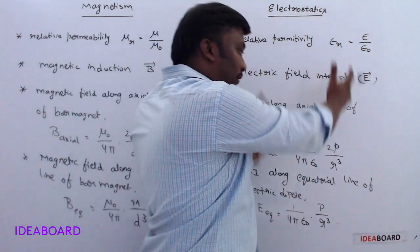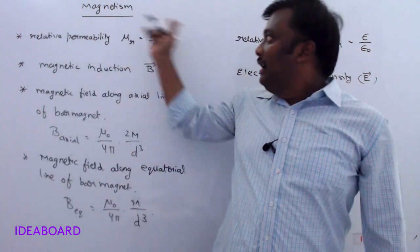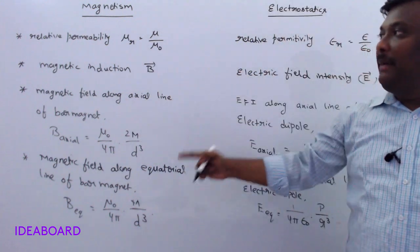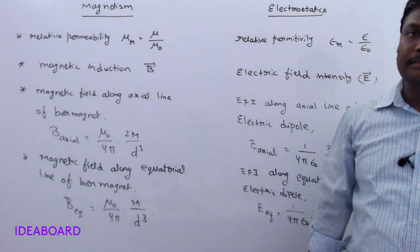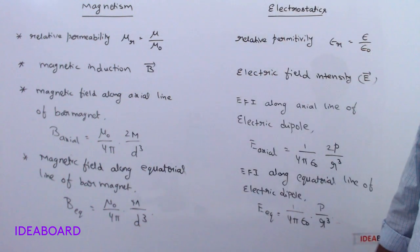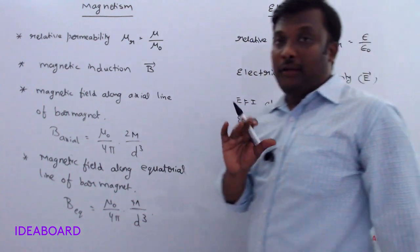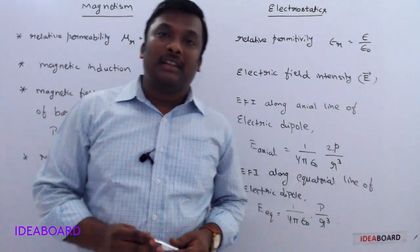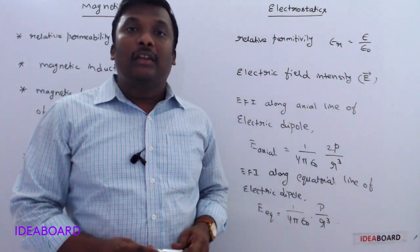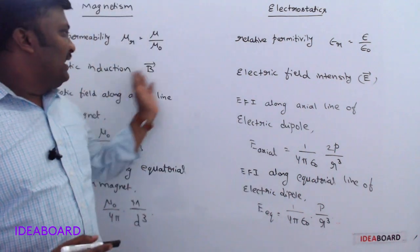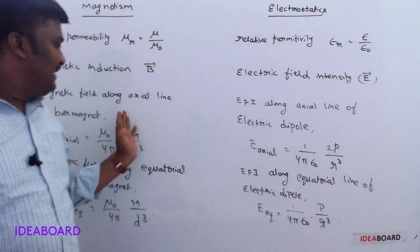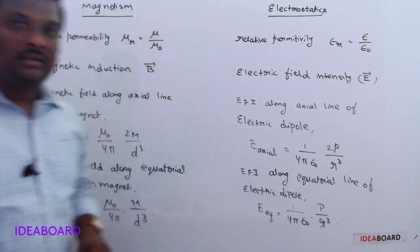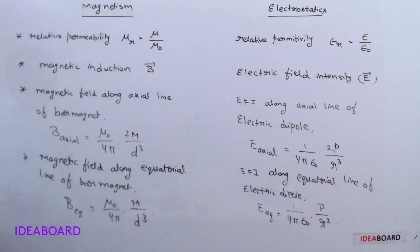If you are good in electrostatics, then all contents are related with magnetism formulas. Everywhere, just remember the analogy — for objective purposes you can get good marks, because all formulas are analogous. Please note it down.